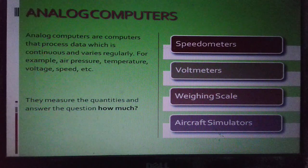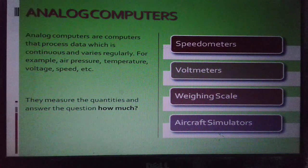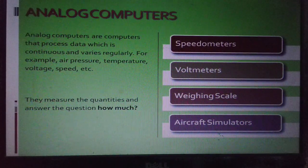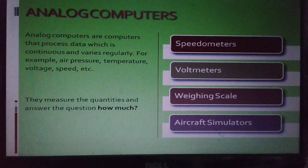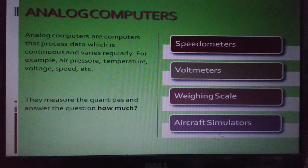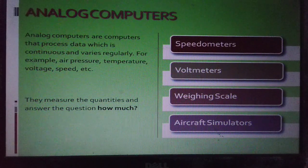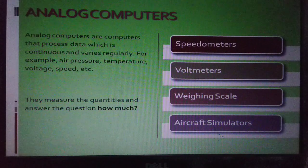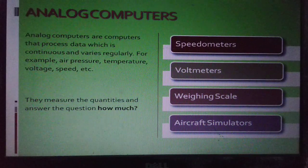Because analog computers work on quantities or values that change continuously, the results given by them are approximate. Thus, they are said to measure the quantities and answer the questions how much of that quantity we have. For example, how much air pressure, how much temperature, how much voltage or speed.